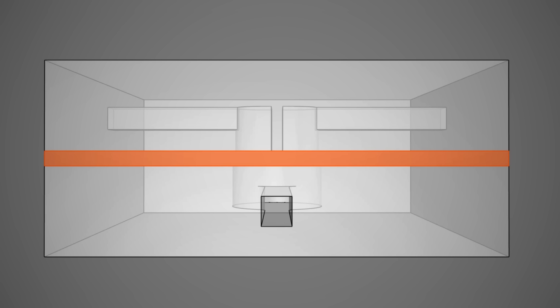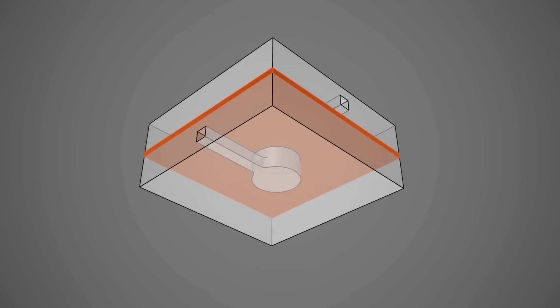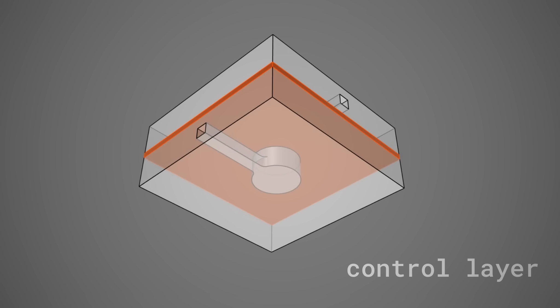With the solid bodies in place, you can see the three-layer architecture. On top sits the flow layer. In the middle, the squishy membrane. And on the bottom, the control layer.